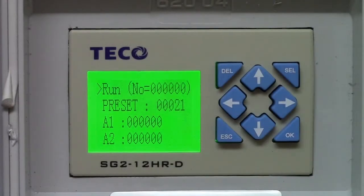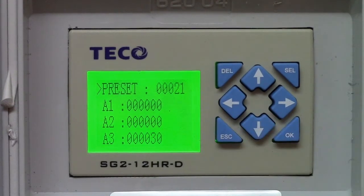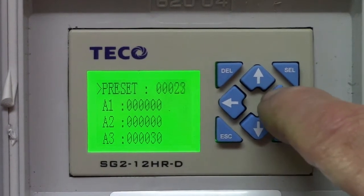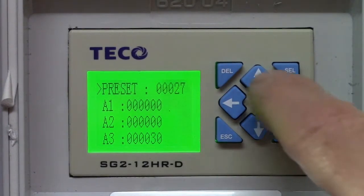Do this by pressing the down arrow once to highlight the preset line, then press the right or left arrows until you read 27. Then press the up arrow to put the controller back into run mode.